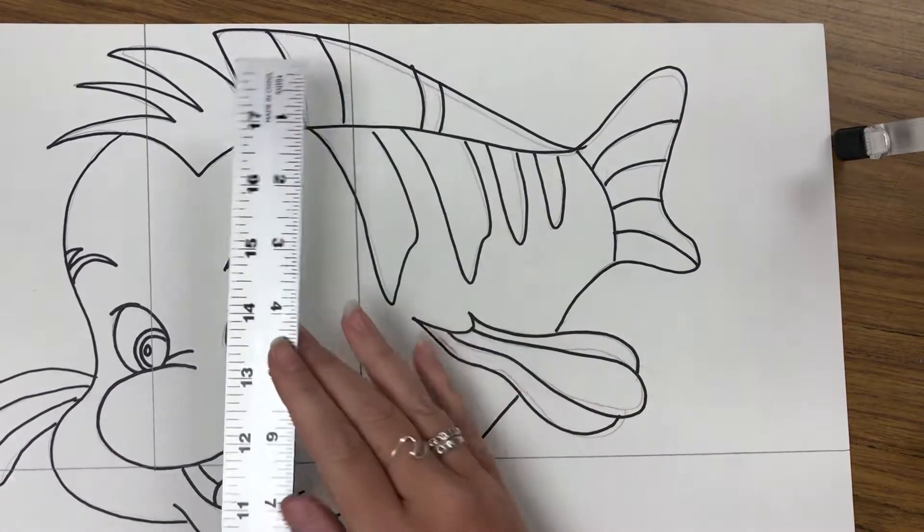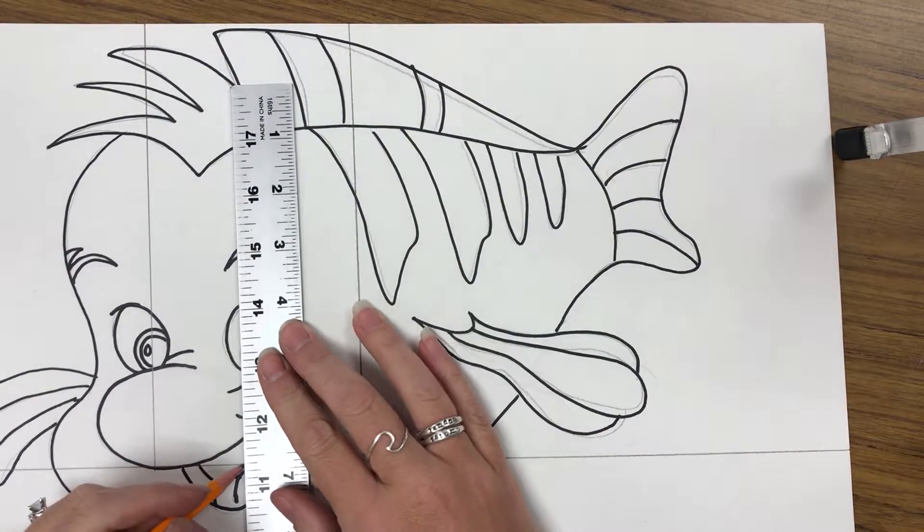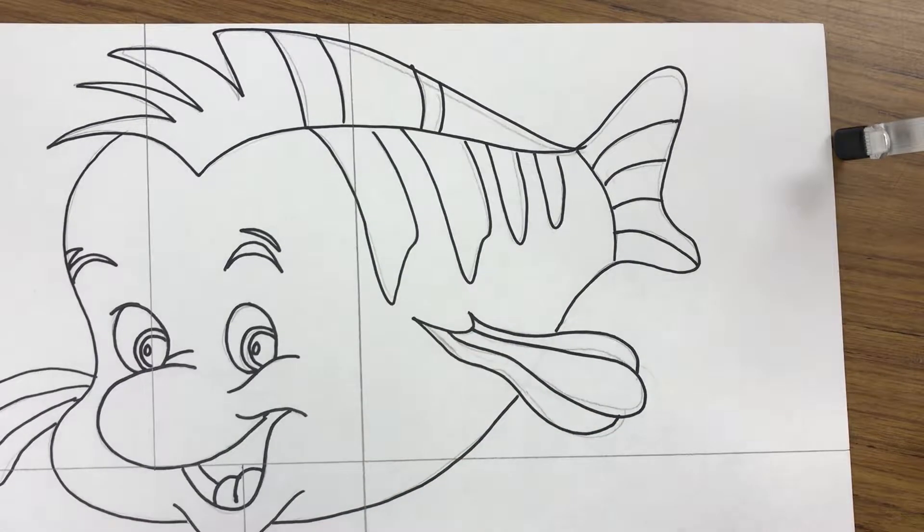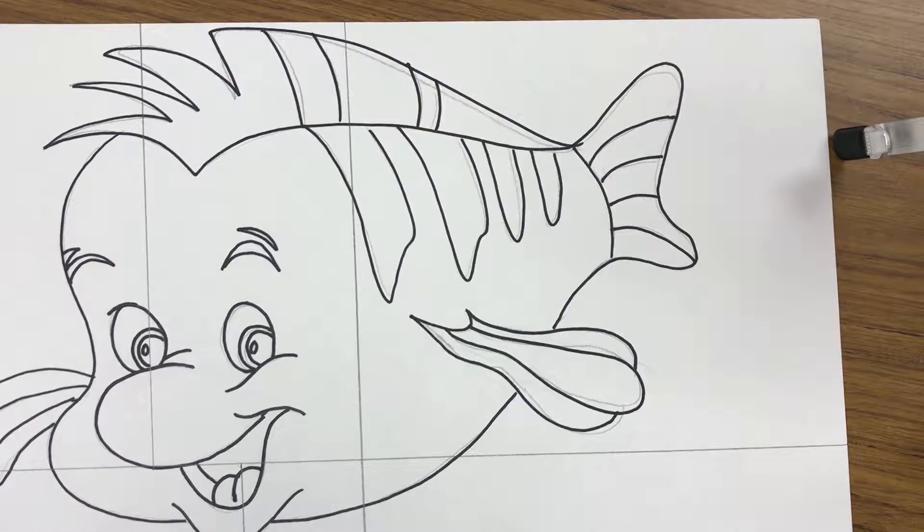I want you to remember that you are not creating a checkerboard. Your squares should not be all the same size. Your lines should not be equidistant.